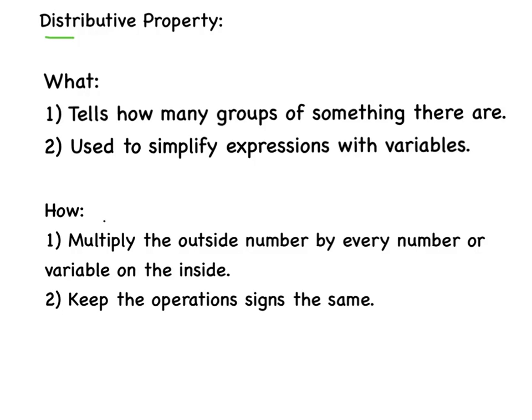I'm going to describe the distributive property — what it is, how it works, and then show you an example. First, what it is: it tells us how many groups of something there are, basically how many groups of whatever we're working with. And we're going to use it to simplify expressions with variables.